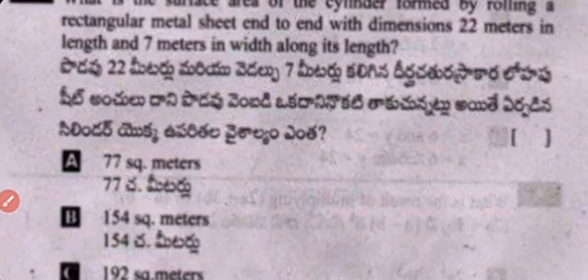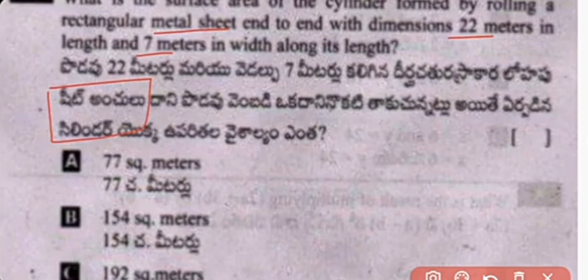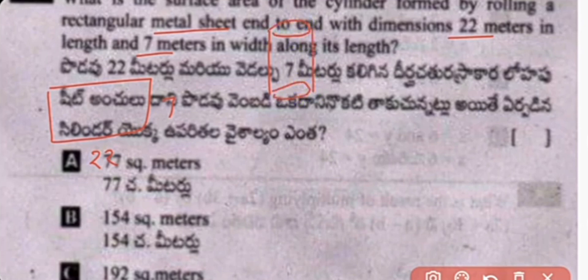Question 2: What is the surface area of a cylinder formed by rolling a rectangular metal sheet of dimensions 22 and 7 meters? The rectangle is converted into a cylinder. The height of the cylinder is 7 centimeters.